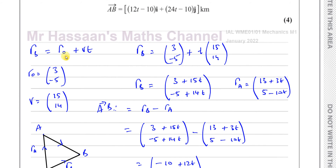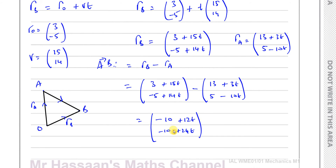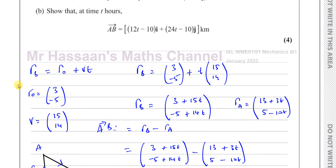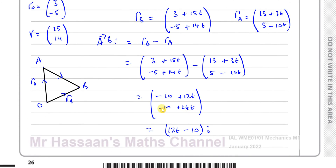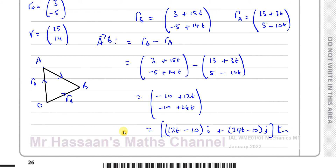So that's exactly what we had to show. The i component is (12T - 10) and the j component is (24T - 10). That gives vector AB equals (12T - 10)i plus (24T - 10)j kilometers. That's the answer to part B.